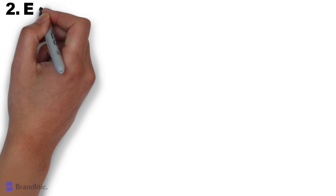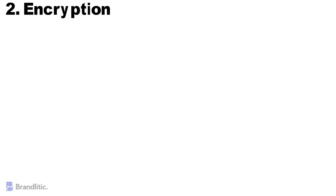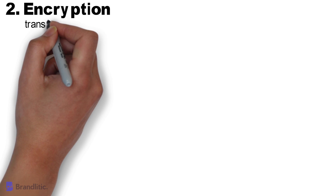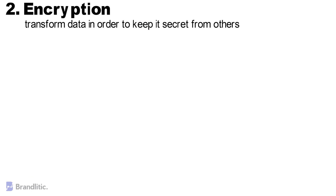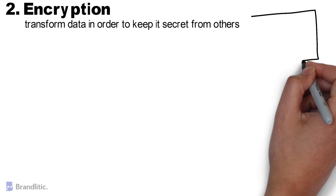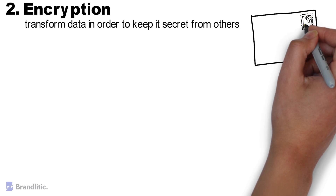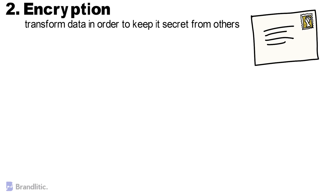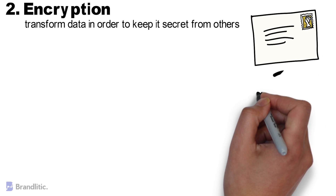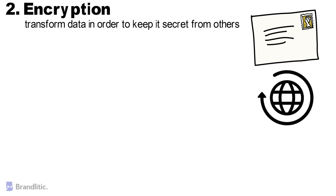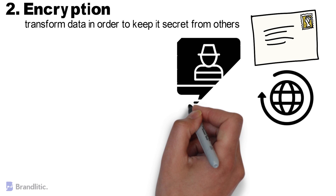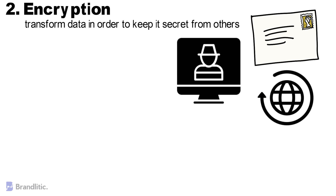Encryption. The purpose of encryption is to transform data in order to keep it secret from others. For example, encryption is used if you are sending someone a secret letter that only they should be able to read, or if you want to securely send a password over the internet. Rather than focusing on usability, the goal is to ensure that data cannot be consumed by anyone other than the intended recipients.